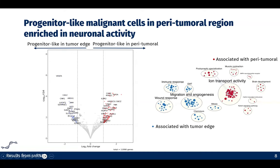Taking all of those genes, we did gene set enrichment analysis and found that within the peritumoral regions, the enriched terms are associated with ion transport activity, brain development, and the Notch signaling pathway, suggesting this is an enhanced neuronal activity.